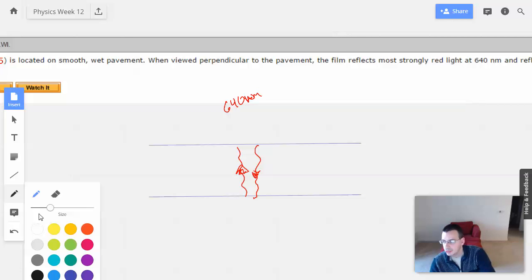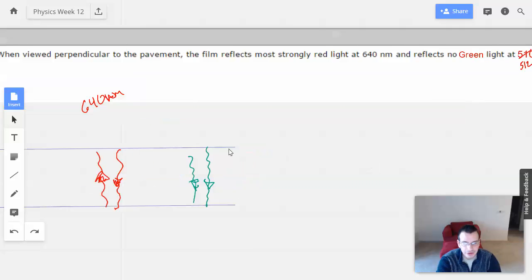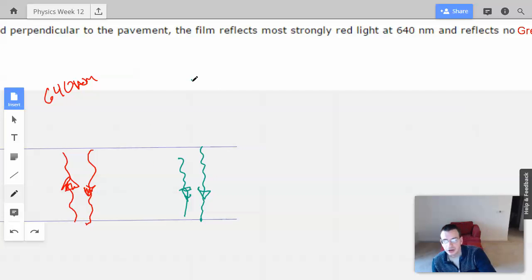And then we're going to have green, which comes down, goes up, and is completely destructive. 512 nanometers.